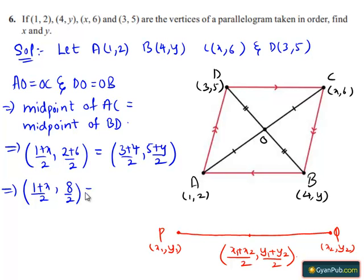8 divided by 2 equals 3 + 4 is 7. So 7/2, (5 + y)/2.